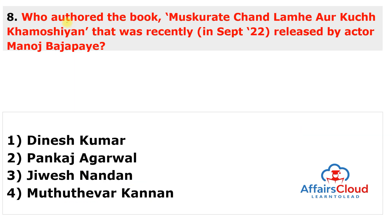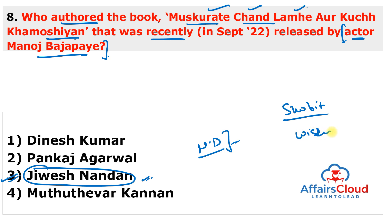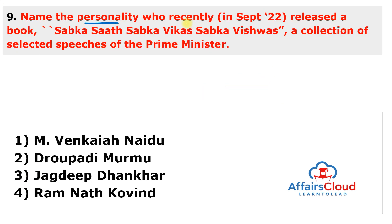The next question: Who authored the book 'Muskurate Chand Lamhe Aur Kuch Khamoshiyan,' recently released by actor Manoj Bajpayee? The answer is Jivesh Nandan. Actor Manoj Bajpayee released this book — a banquet of poems by Jivesh Nandan — at India International Centre in New Delhi. The publisher is Shobit Arya, founder and publisher of Wisdom Tree, an Indian publishing organization. Jivesh Nandan is a retired IAS officer of the UP cadre, 1987 batch, and also penned 'Maha Kumbh: A Spiritual Journey.'